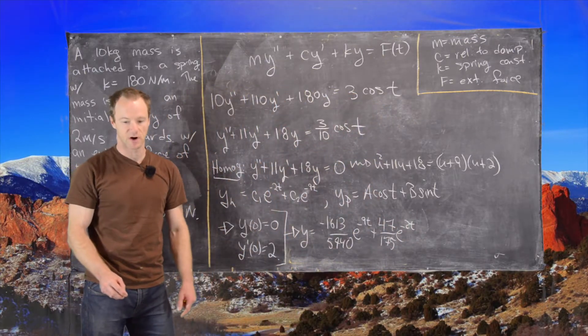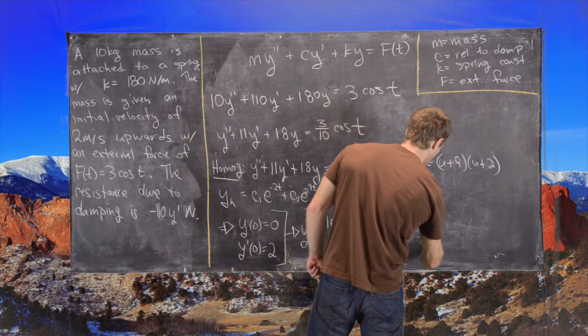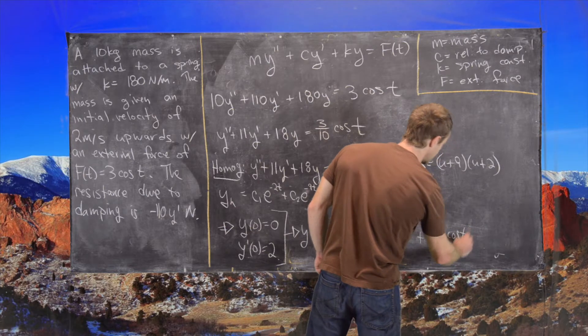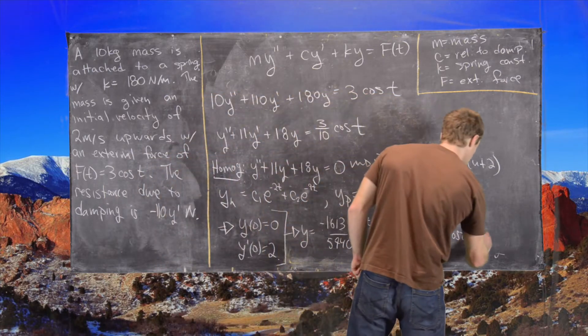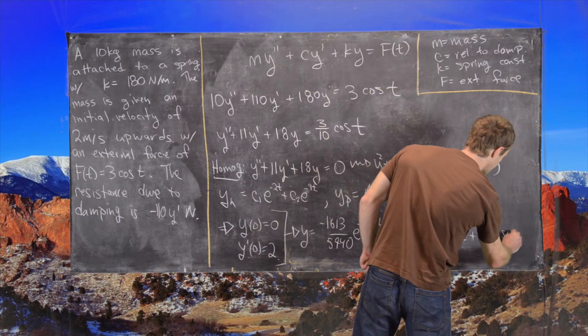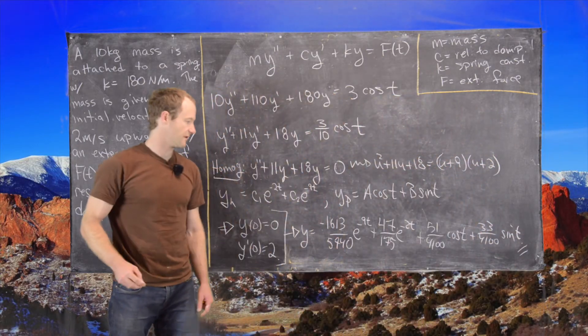So, that's our exponential parts. And then we have plus 51 over 4100 cosine t and then finally plus 33 over 4100 sine t. And that is the final answer.